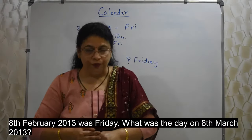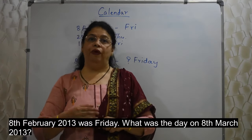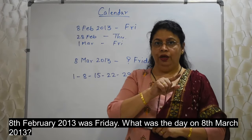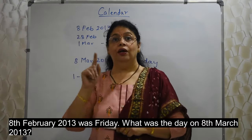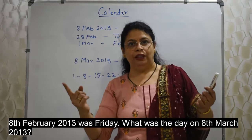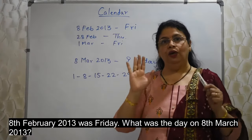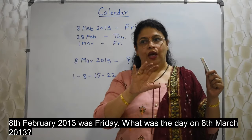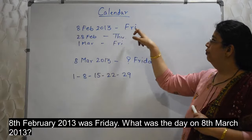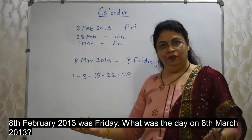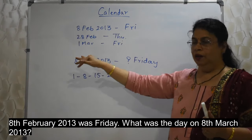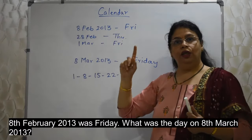Method 2: In a non-leap year, the days of February and March fall on the same days. For example, 1st February and 1st March fall on the same day because February completes exactly 4 weeks. So if 8th February is Friday, then 8th March is also Friday — no calculation needed. The answer from Method 2 is also Friday.